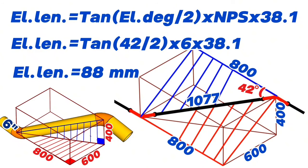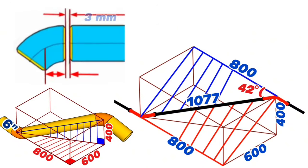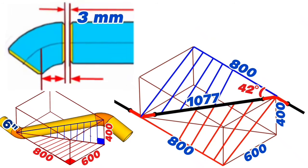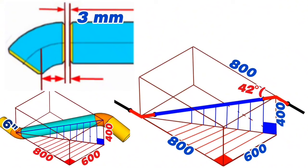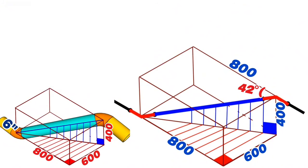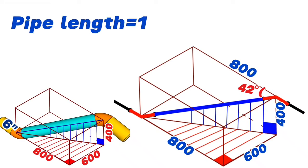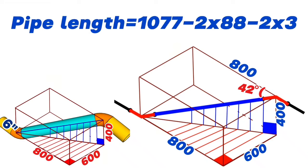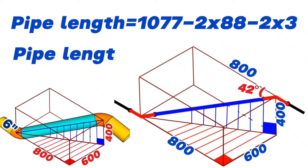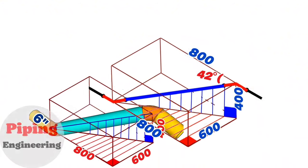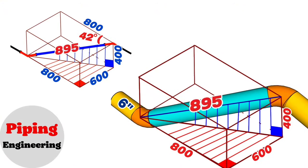During fit-up, a gap of about 3 millimeters should be left between pipe and elbow for better root welding. Subtracting the two elbow lengths and welding gaps from total length: pipe length equals 1,077 minus 2×88 minus 2×3 equals 895 millimeters. So the blue pipe section length is 895 millimeters.